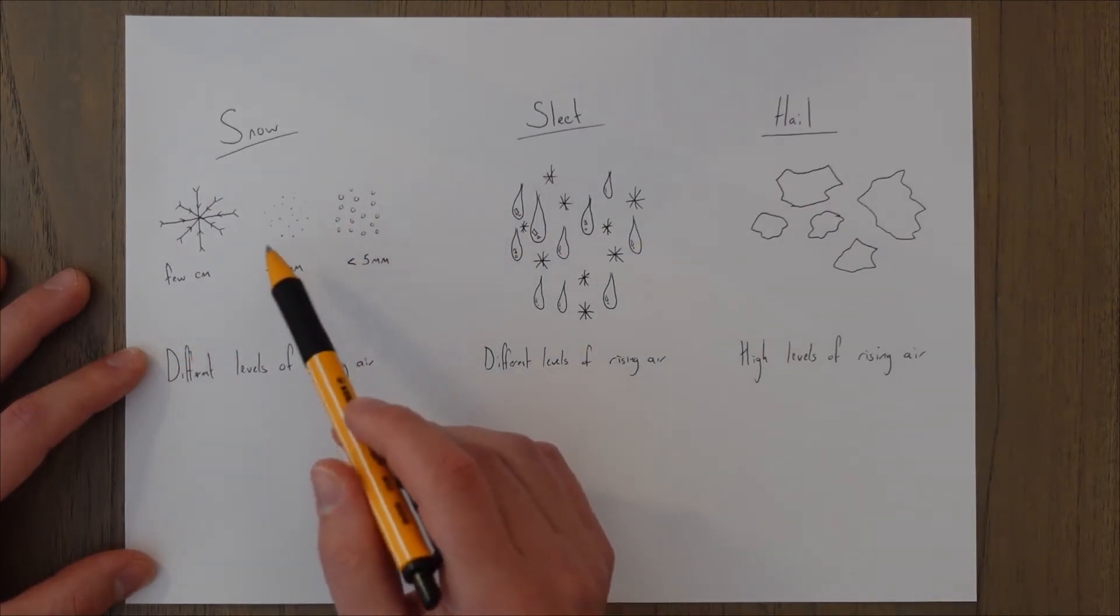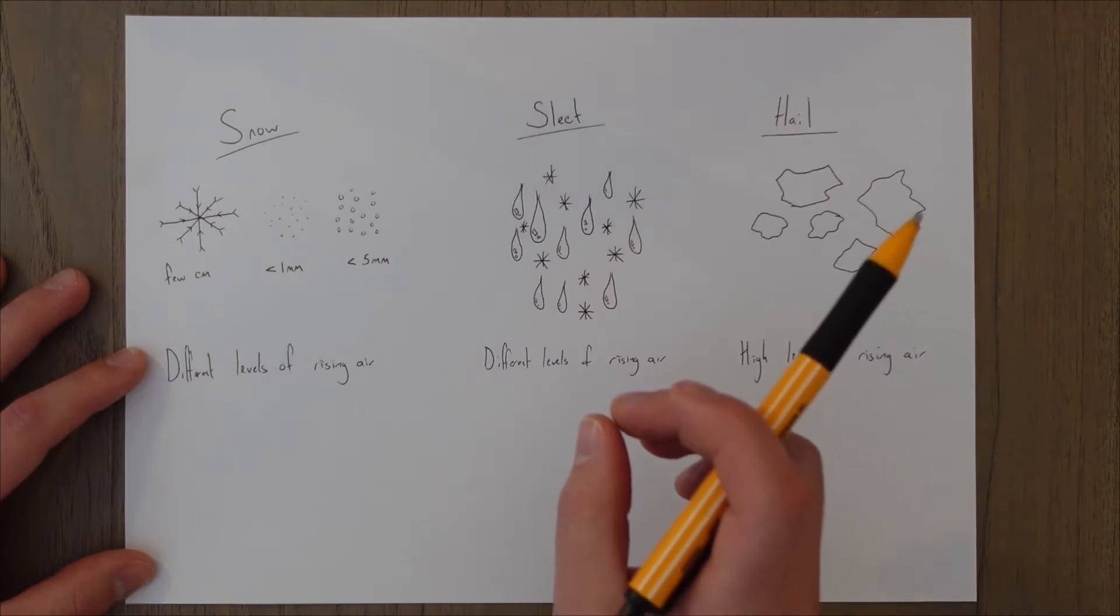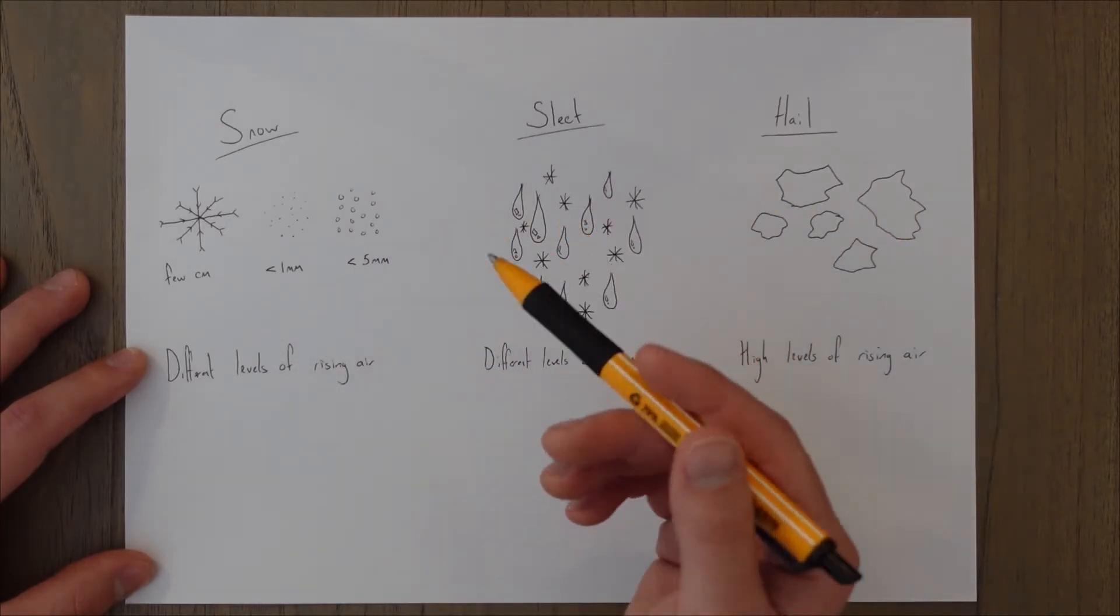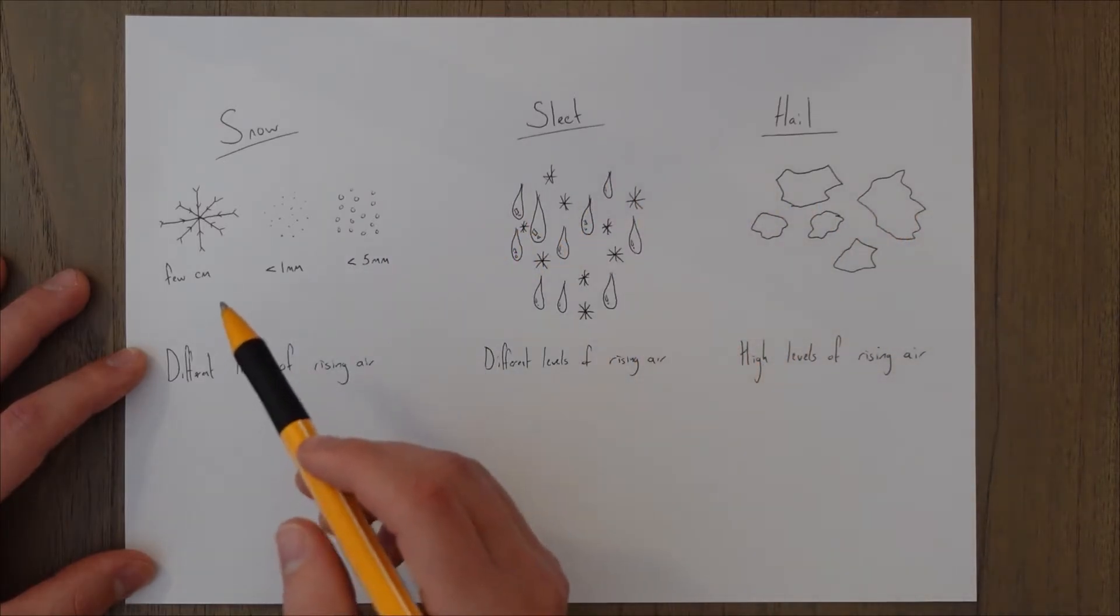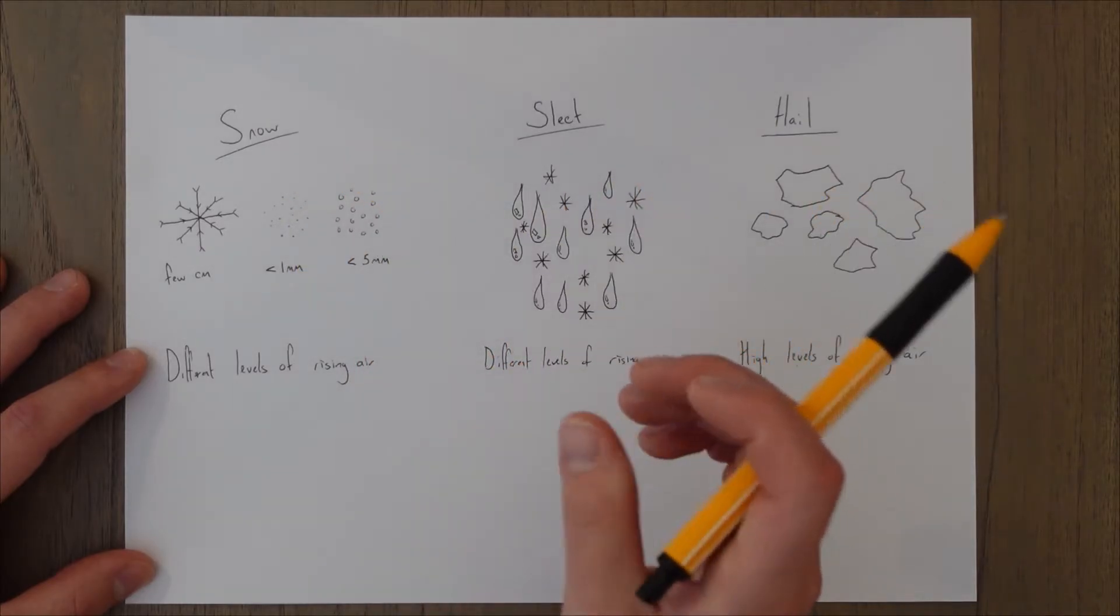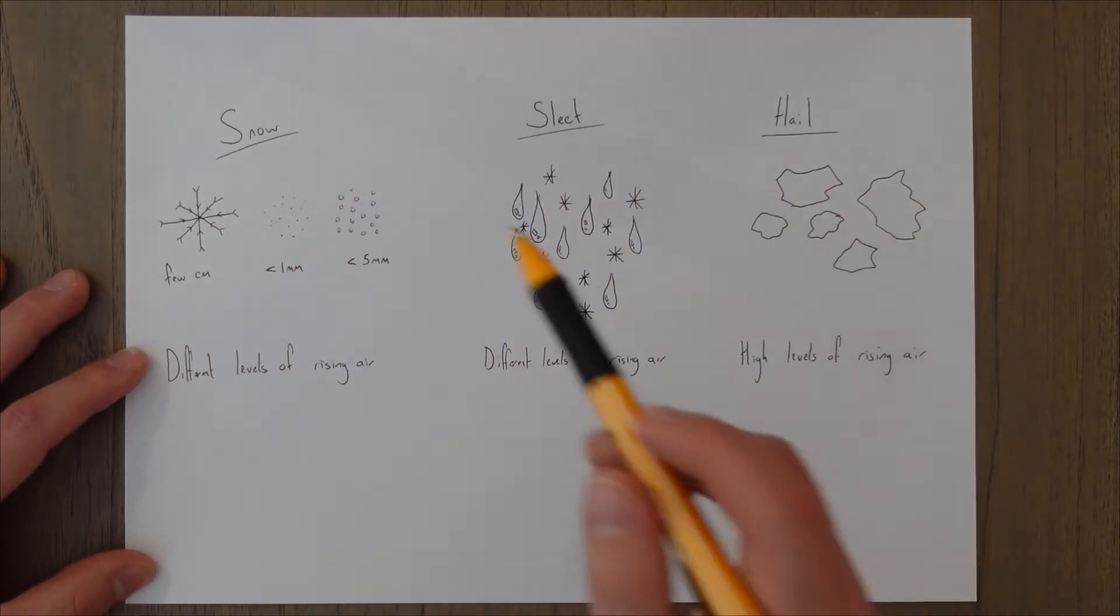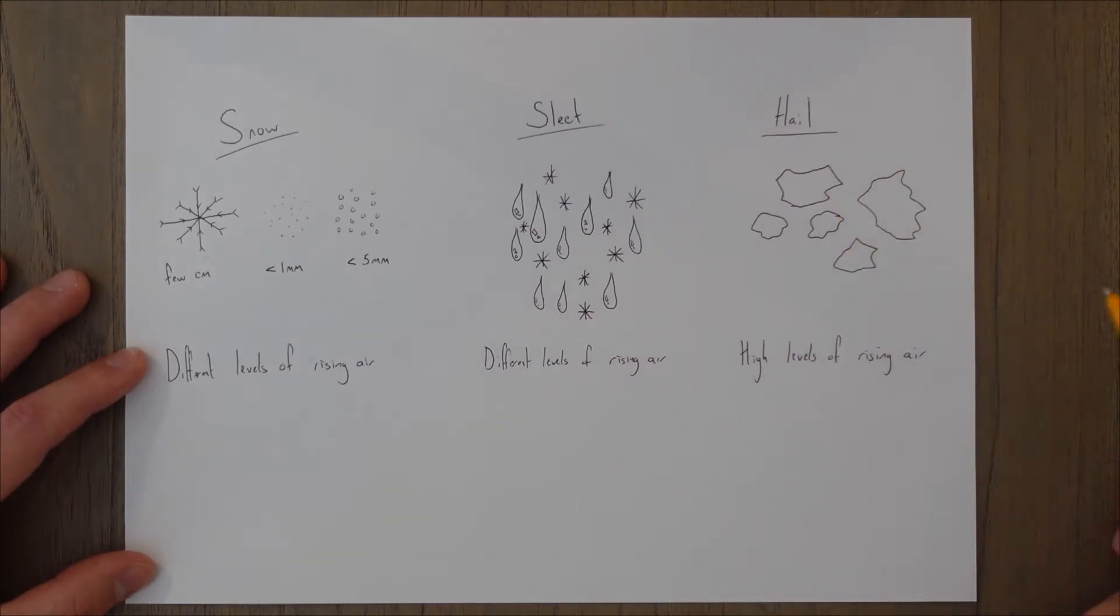Then you have snow grains which are very small particles about one millimeter or less in diameter and then you would have snow pellets which are like round balls around five millimeters in size.